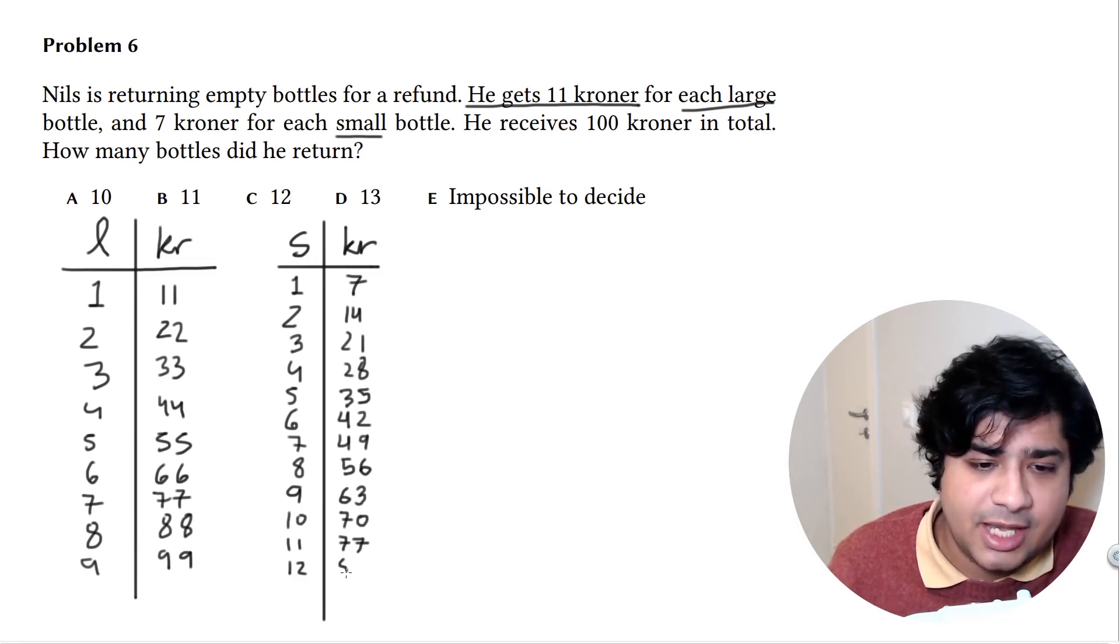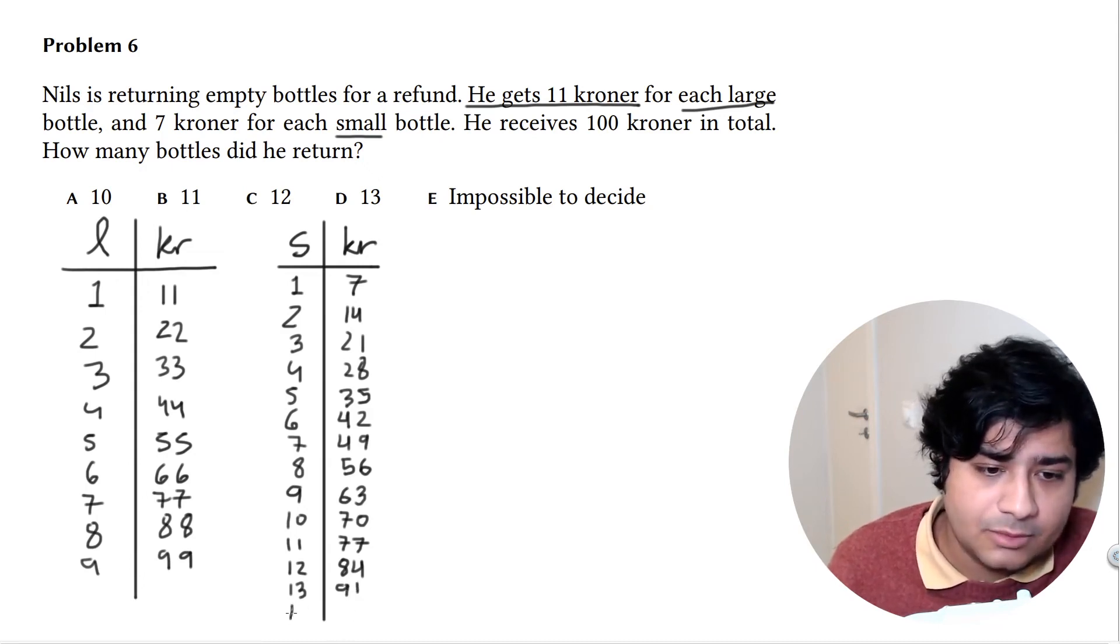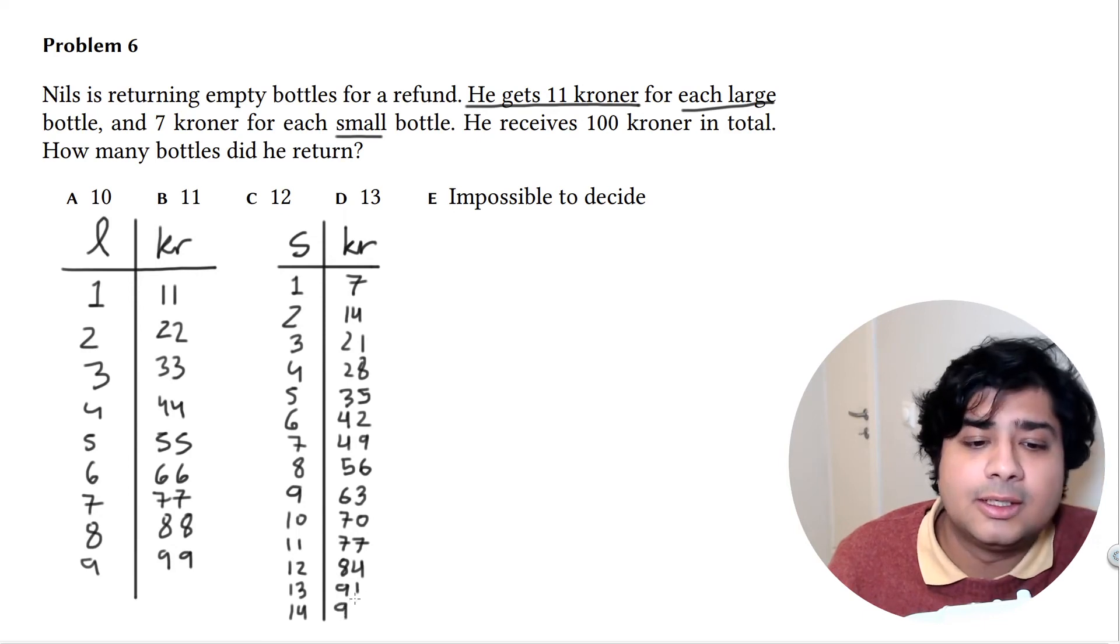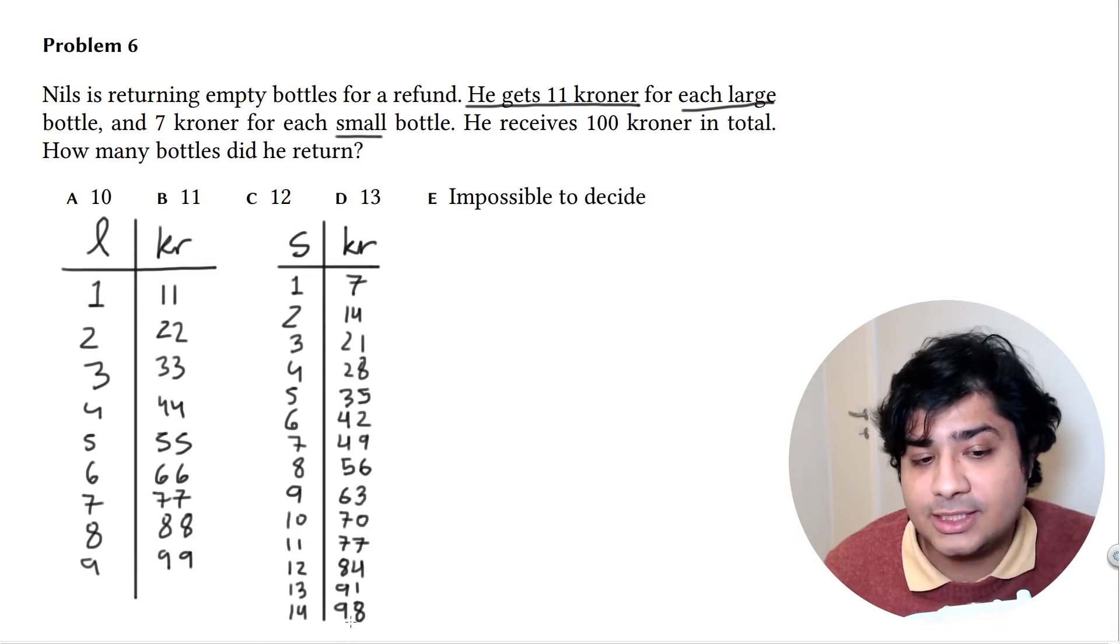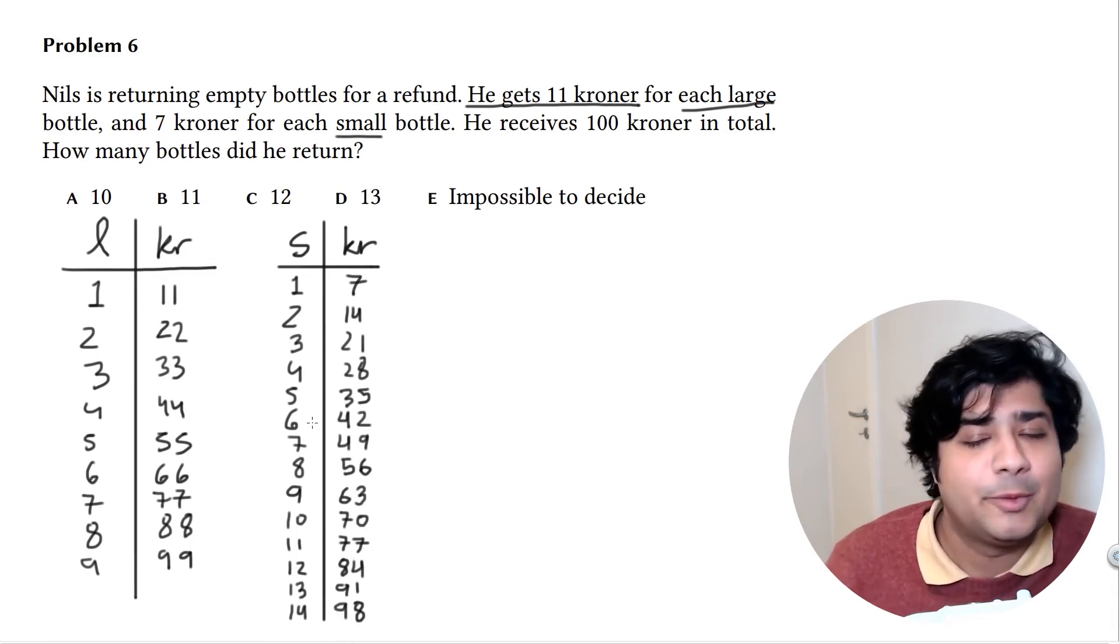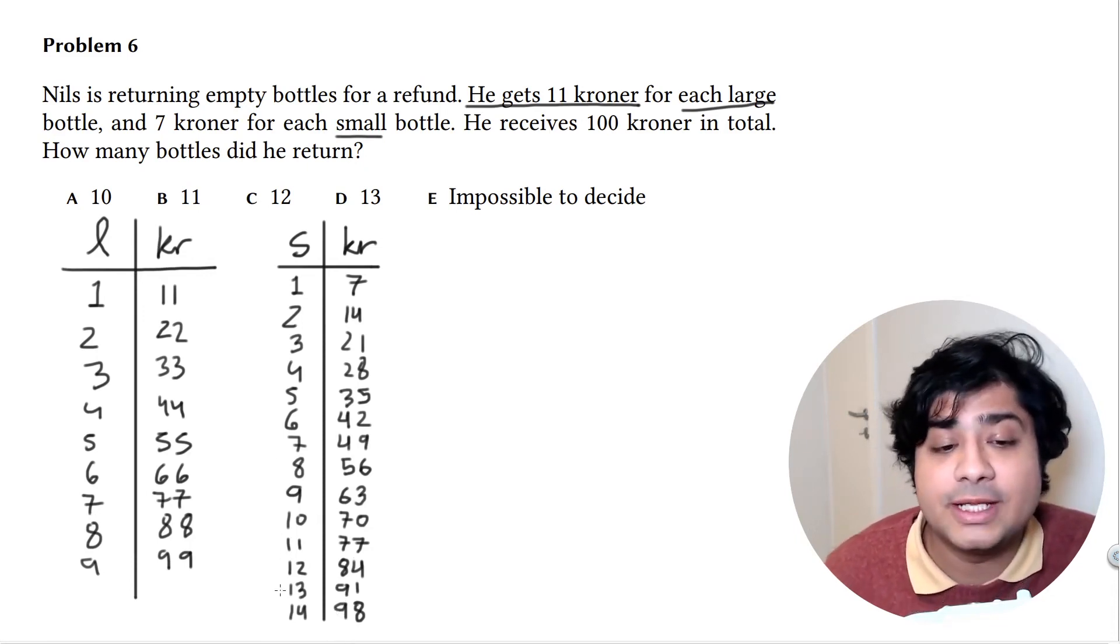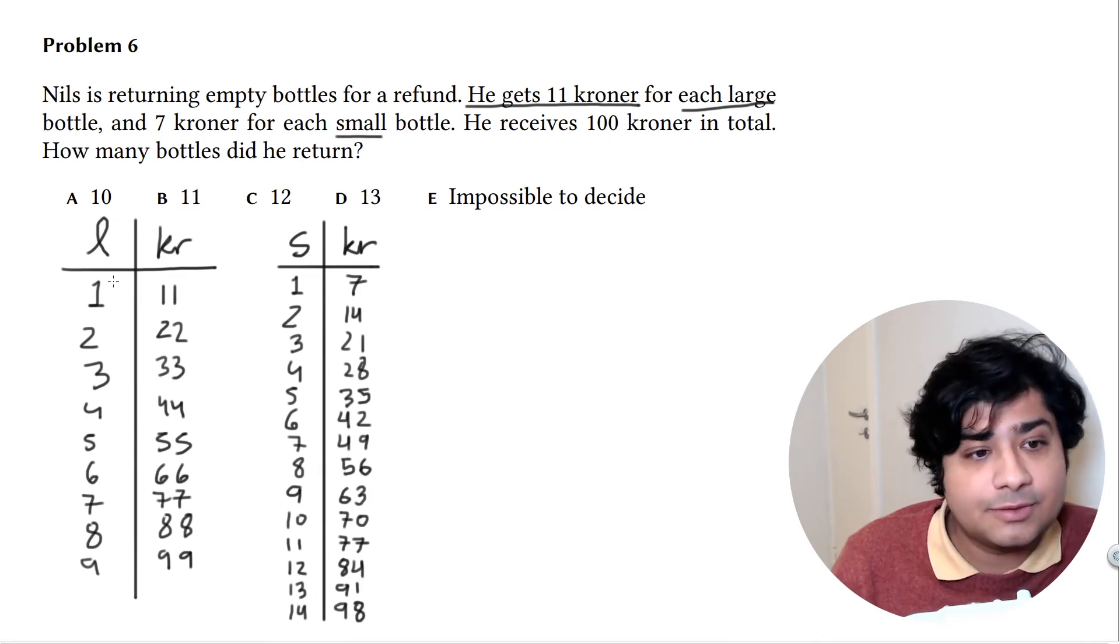Then 11 is 77, then 12 is 84, 13 is 91, and 14 is 98. We've reached such a high number we don't really need to keep going. We could have stopped before this, but now we have the options for both.